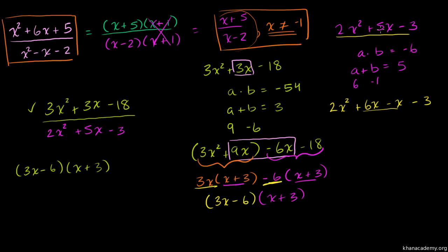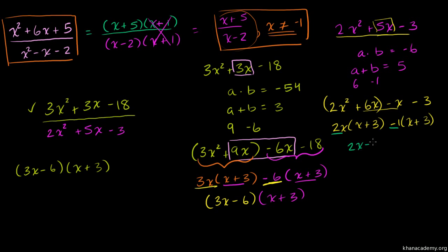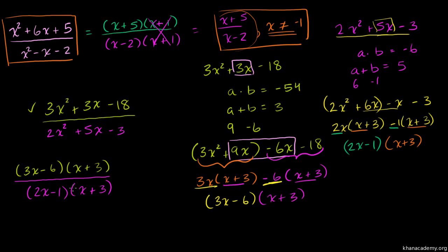Undistributing gives us (2x − 1)(x + 3). So the denominator factors as (2x − 1)(x + 3). Now we can see a common factor of (x + 3) in both the numerator and denominator.